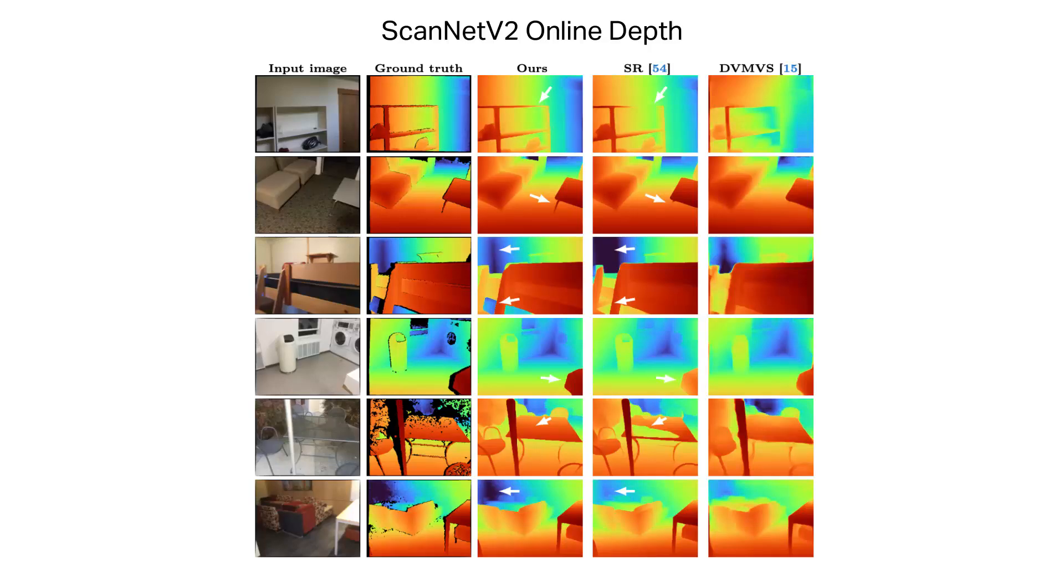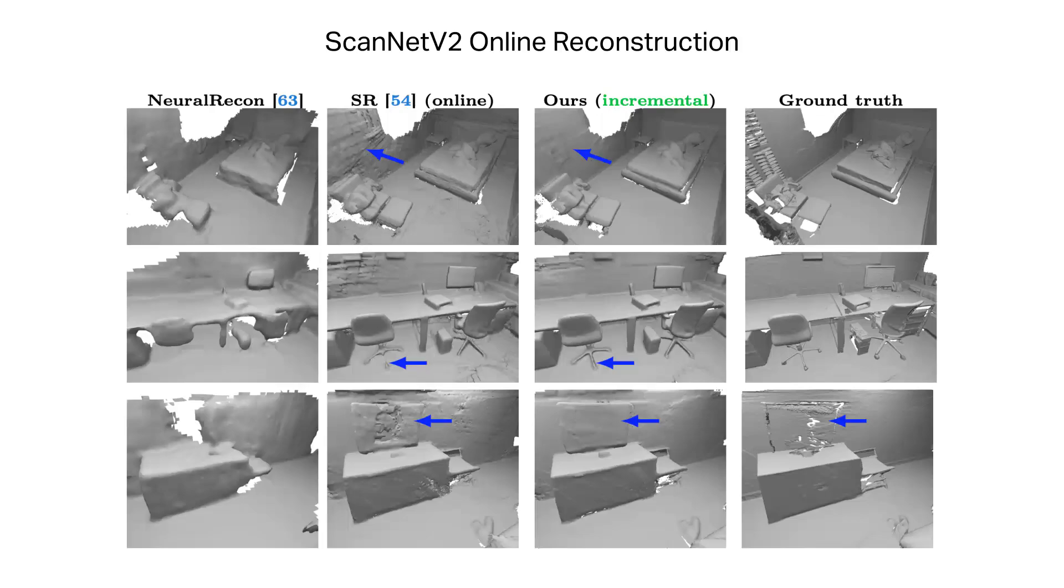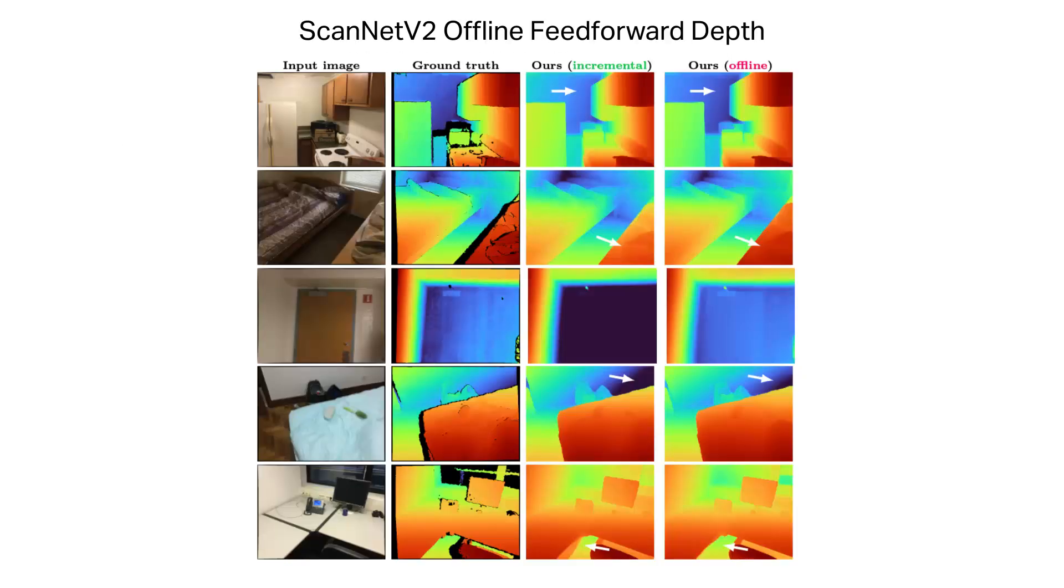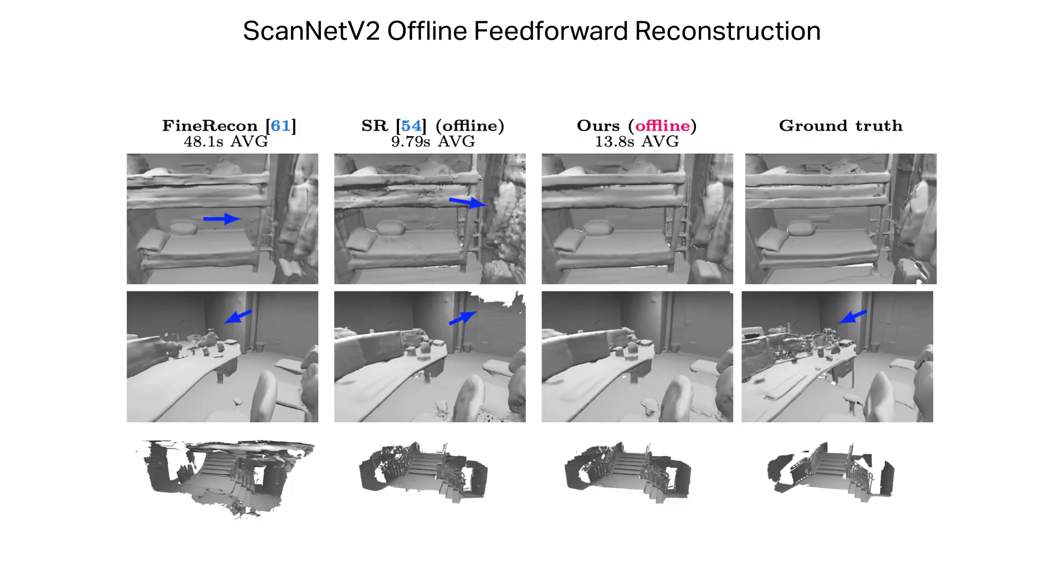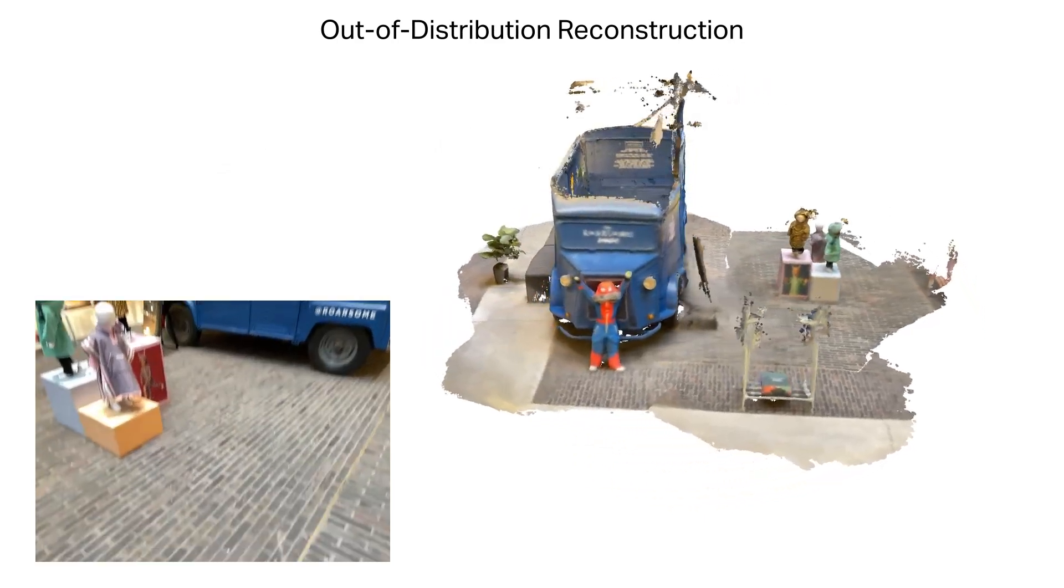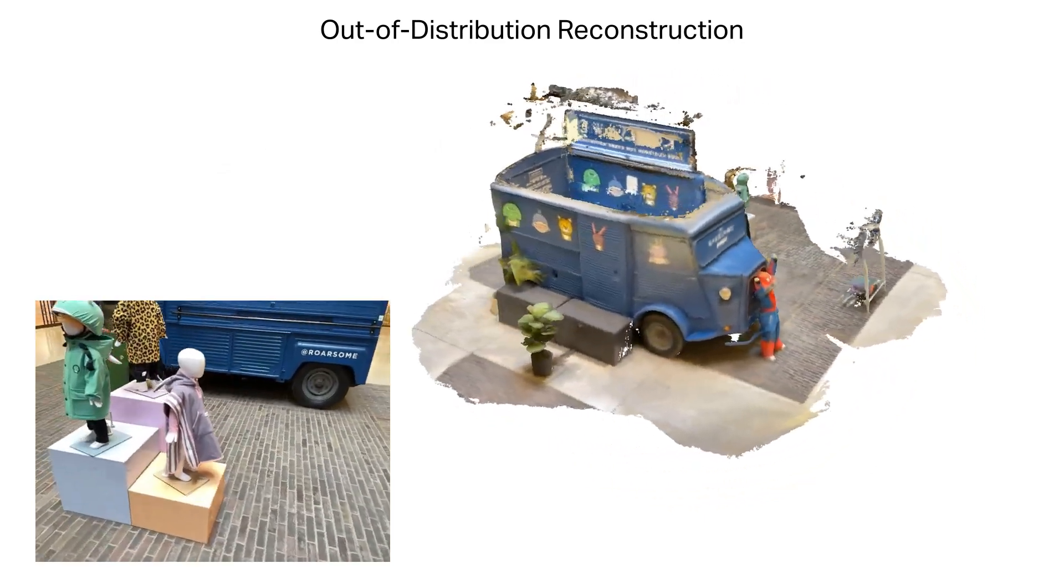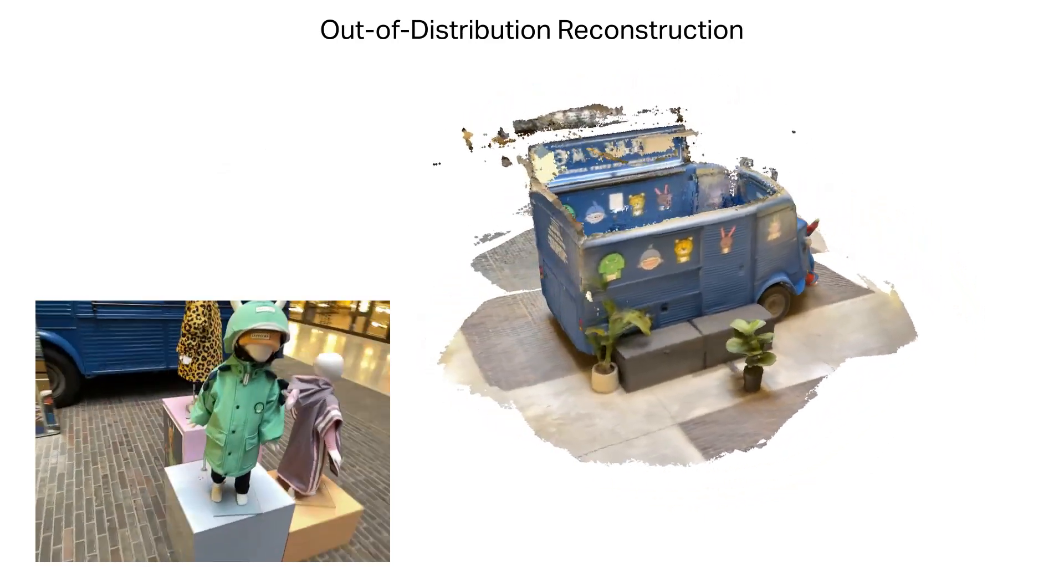Overall, our model shows superior metric depth performance. Those depths yield sharper, more complete reconstructions. This advantage holds for both the online and offline cases. We also show how our model performs well in the reconstruction of out-of-training distribution scenes.